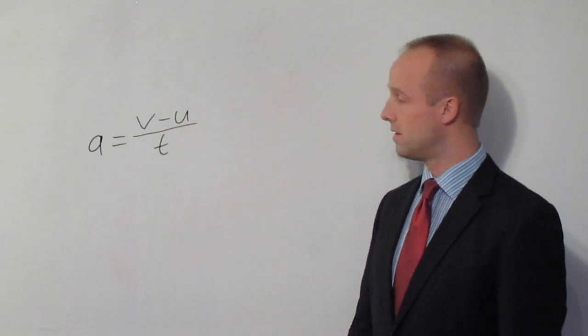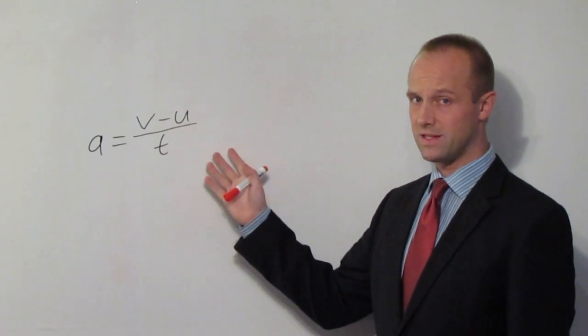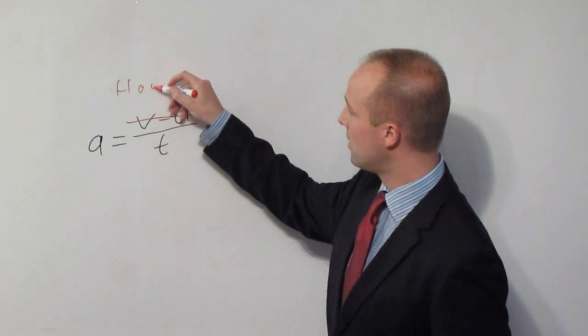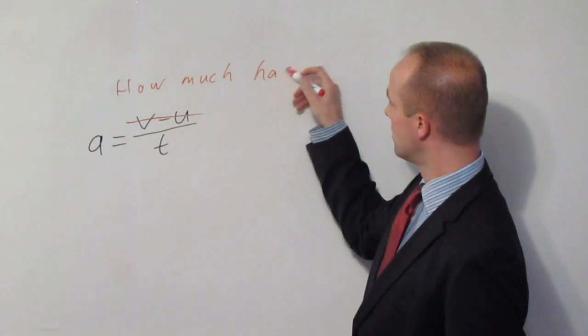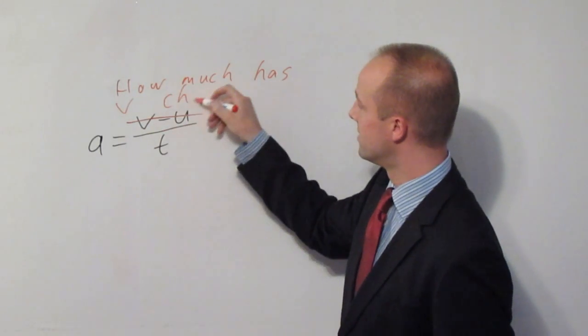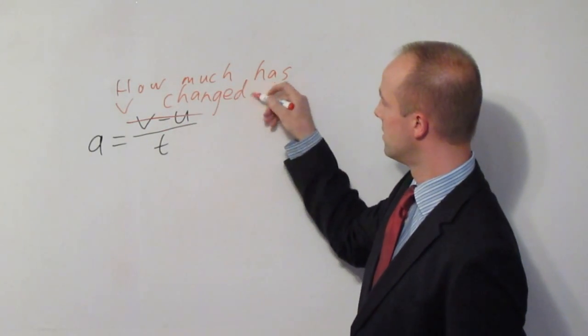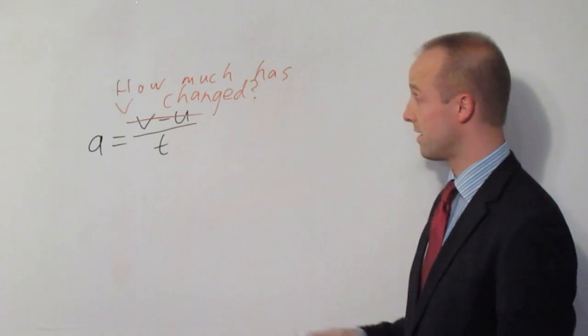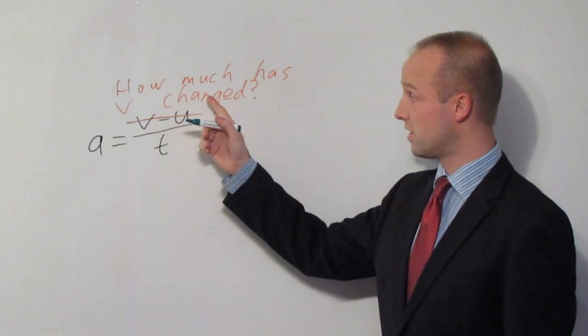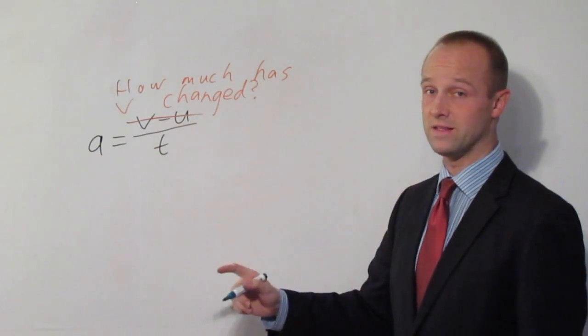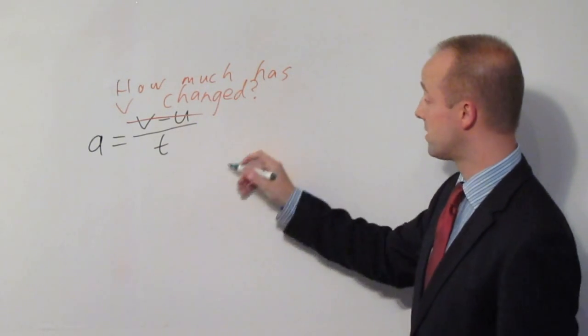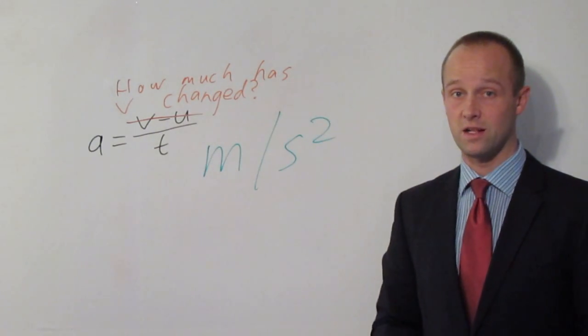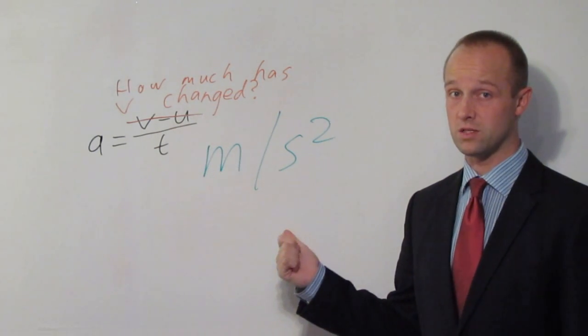So remember, this equation, although it looks intimidating, all it means is how much has the velocity changed. And of course remember that your units, when you work out the acceleration here, once you've done how much the velocity has changed divided by the time, your answer is always going to be in meters per second squared. Acceleration is the only thing which has units of meters per second squared.